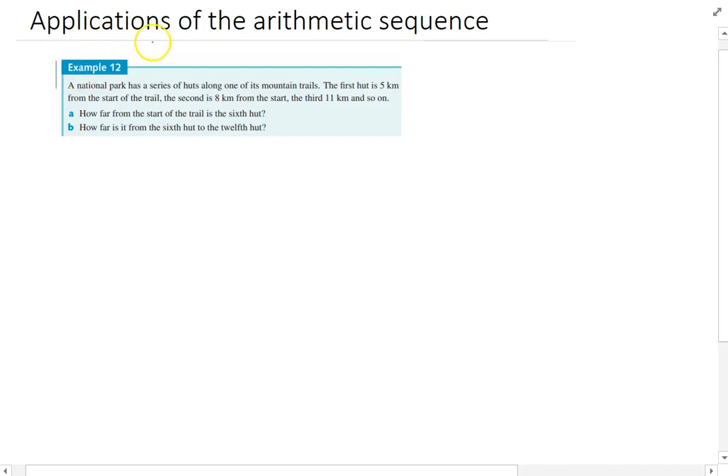A quick application of an arithmetic sequence. A national park has a series of huts along one of its mountain trails. The first hut is 5 km from the start, the second is 8 km from the start, and the third is 11 km from the start. This is an arithmetic sequence.